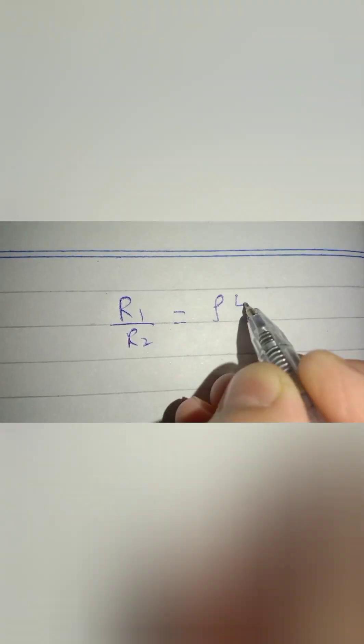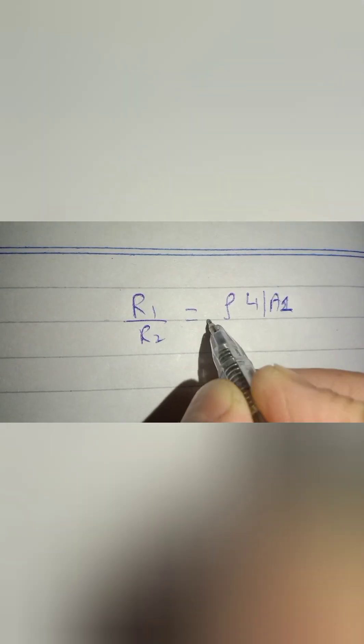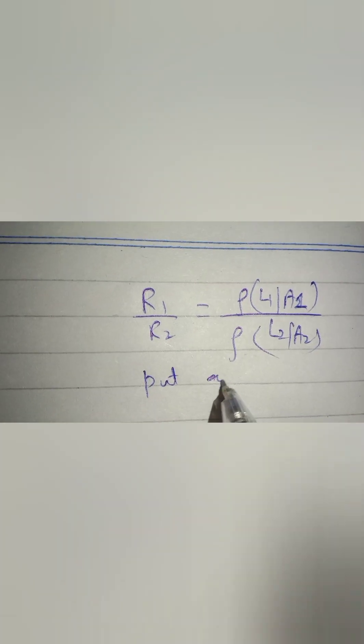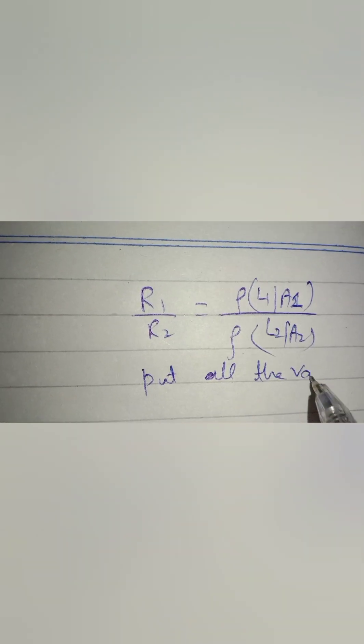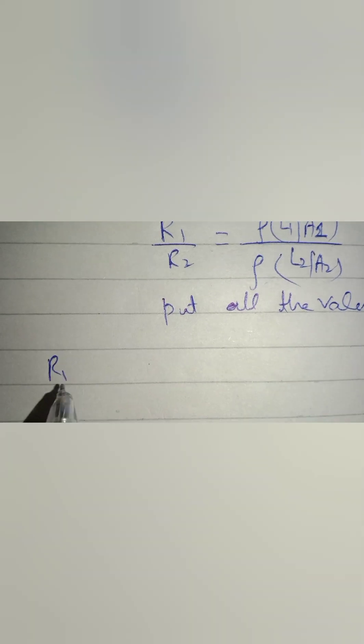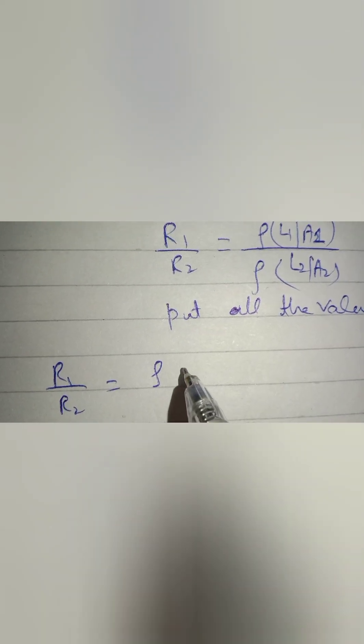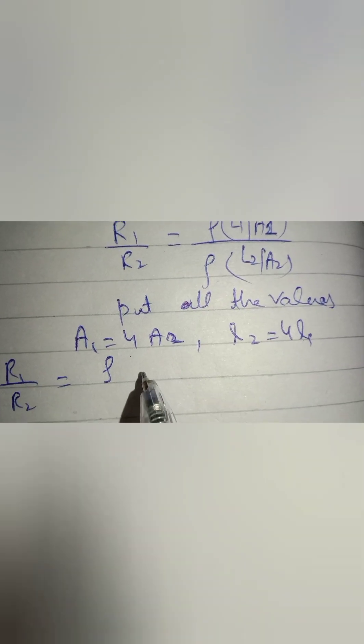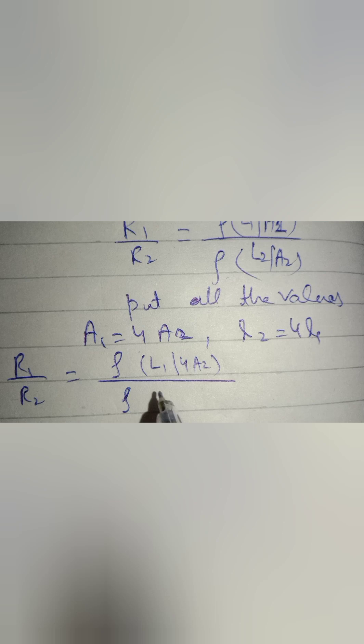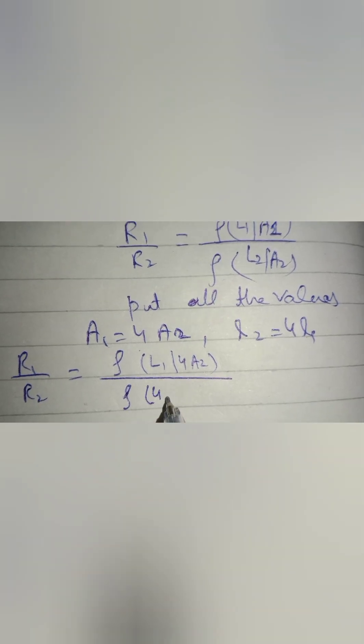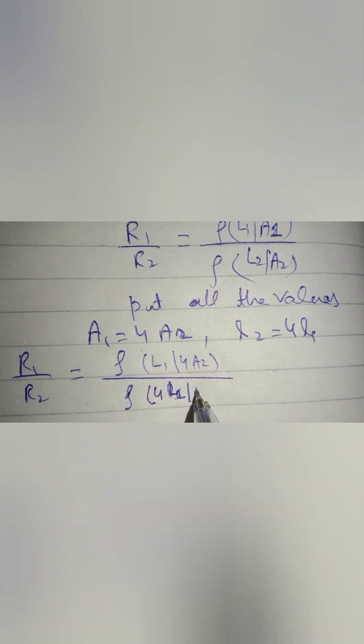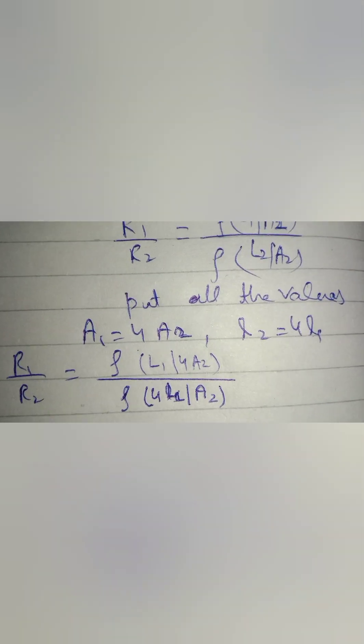Now we will find our original ratio R1 over R2, which equals ρL1 over A1 divided by ρL2 over A2. Now we will put all the values of L1, A1, L2, and A2. We know that A1 equals 4 times A2 and L2 equals 4 times L1.